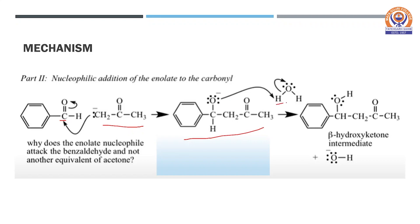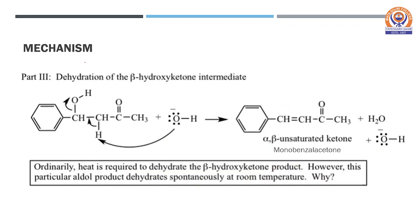This anion immediately abstracts a proton from water, leading to a beta-hydroxy ketone intermediate. The enolate nucleophile attacks benzaldehyde rather than another equivalent of acetone because ketones do not preferably self-condense under the given conditions. In the third part of the mechanism, dehydration of the beta-hydroxy ketone intermediate takes place in the presence of base, leading to the formation of an alpha-beta unsaturated ketone also known as monobenzyl acetone. Ordinarily heat is required to dehydrate some beta-hydroxy ketone products; however, this particular aldol product dehydrates spontaneously at room temperature.